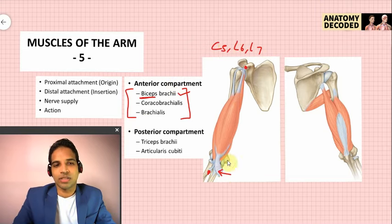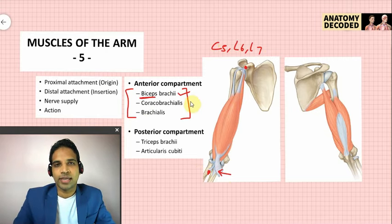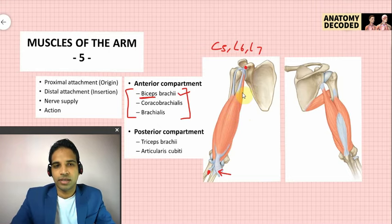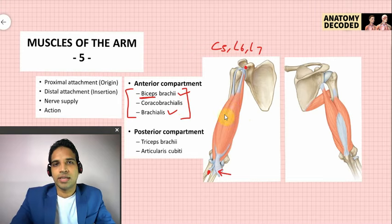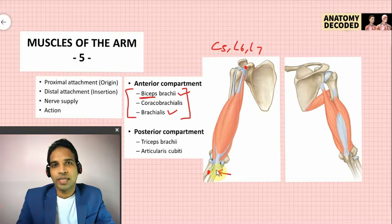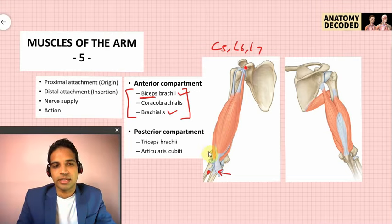Biceps brachii causes flexion at the elbow joint and is a strong supinator in the flexed elbow. Coracobrachialis has its distal attachment at the medial border of the humerus, middle 5 cm, and its action is adduction at the shoulder joint. Brachialis arises from the anterior aspect of the lower half of the humerus (anteromedial and anterolateral surfaces, anterior border entirely) and attaches distally to the ulnar tuberosity on the coronoid process of the ulna. Its action is flexion at the elbow joint.